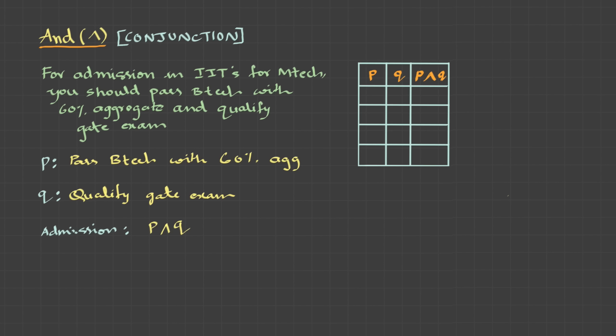Let's formulate this truth table. For admission in IITs for M.Tech, you should pass B.Tech with 60% aggregate and qualify gate exam. I hope you have identified the connective and. And this statement can be broken down to simple propositions. P has passed B.Tech with 60% aggregate and Q is qualify gate exam. And the admission criteria is P and Q. Just hold on for a second and just think about the statement. When do you think the statement will be true? It would be true if this as well as this is true. So if statement P is true and Q is true, then definitely both together will be true. When do you think this will be false? If either this condition is not met or this condition is not met or both, if both are not met, then it will be false. So if P is true, Q is false, this will be false. And if P is false, Q is true, still false. And both are false, 100% no. They will not allow you into IIT.